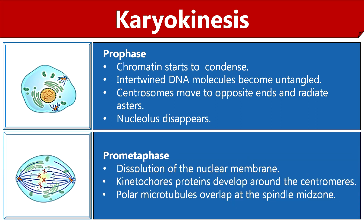Prometaphase is the stage that falls between prophase and metaphase. In this stage, complete disintegration of the nuclear membrane occurs and the sister chromatids become free. A kinetochore protein develops around the centromere holding sister chromatids. The kinetochore microtubules from the centrosome at the poles of the spindle attach to the kinetochores of the centromere. Polar microtubules, not attached to the chromosomes, come from each pole and overlap at the spindle midzone.